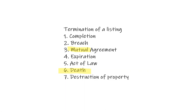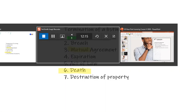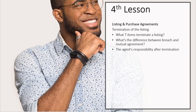The last thing that would terminate a listing is destruction of the property. If the property burns down or gets torn up by a tornado, obviously if there's no physical structure, you can't list that property. You may have to relist it in a different manner — for example, it was a 6,000 square foot home and now it's just four acres of land. These seven things will terminate a listing.